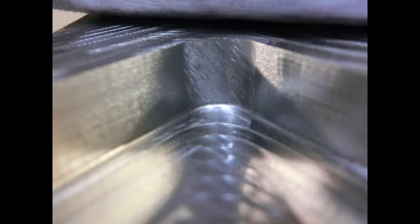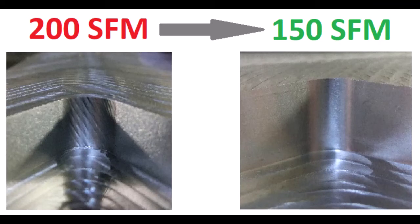In this case, eliminating chatter is the first step. Reduce the spindle speed or shorten the tool overhang to mitigate the chatter.